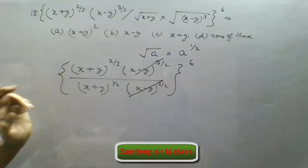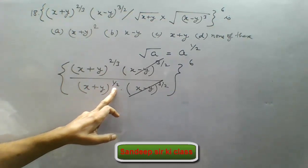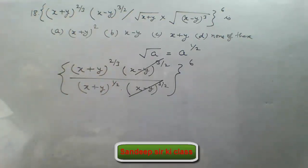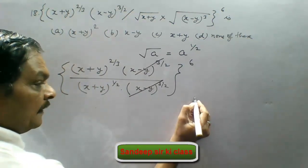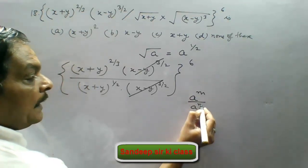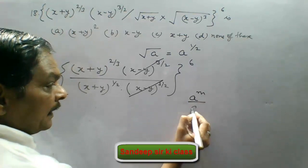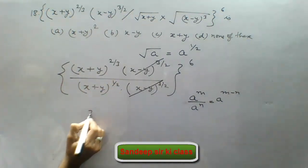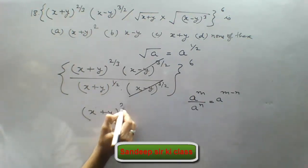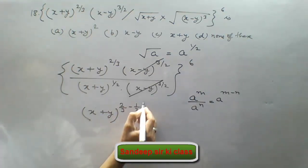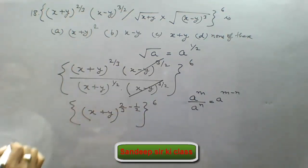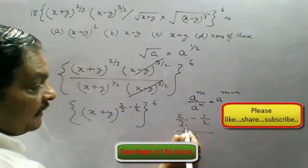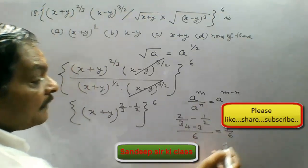Now see the power of x plus y. Here the power is 2 by 3 and here the power is 1 by 2. When we take this as numerator the power will become minus, because in division we know that a to the power m upon a to the power n is equal to a to the power m minus n. So x plus y will have power 2 upon 3 minus 1 upon 2, and the whole power 6 is as it is. Simplifying 2 by 3 minus 1 upon 2, the LCM will be 6, and we get 4 minus 3, so the power will be 1 upon 6.